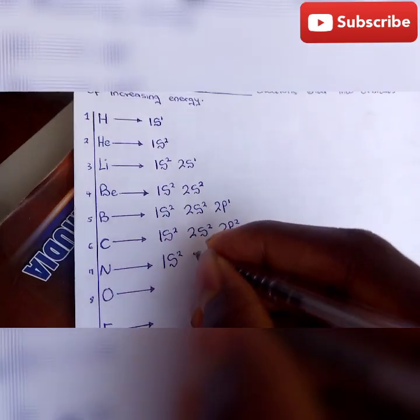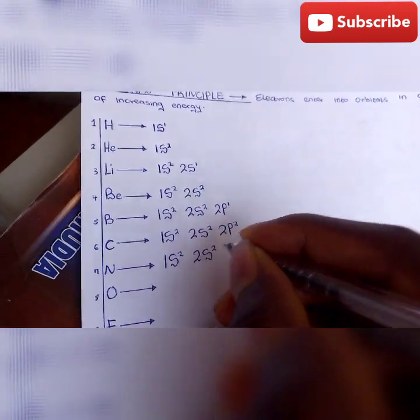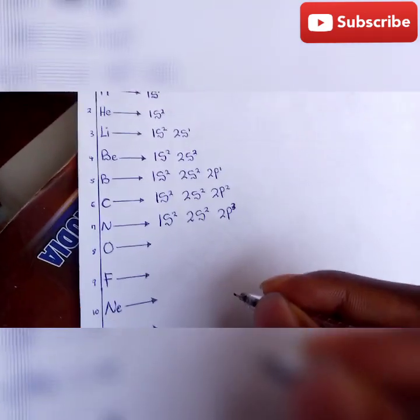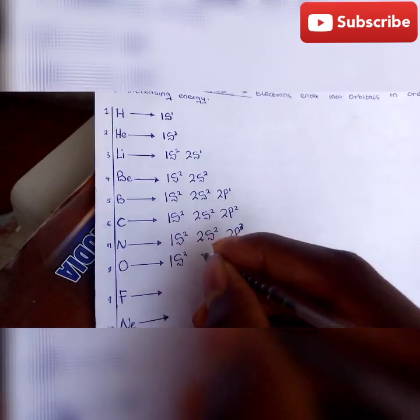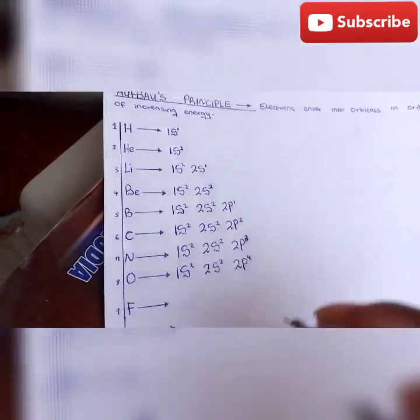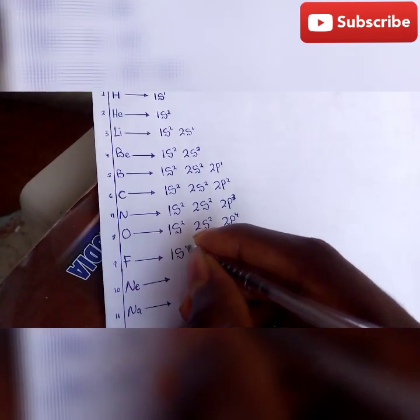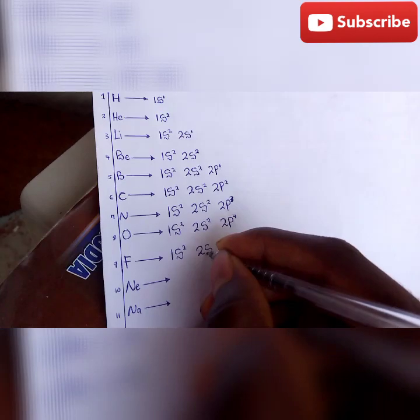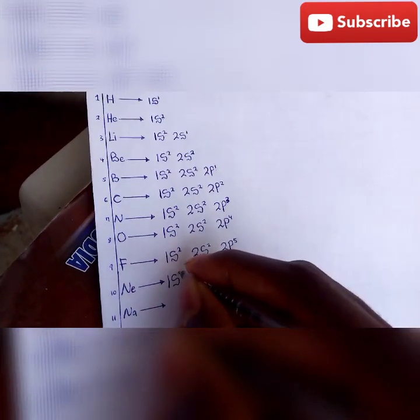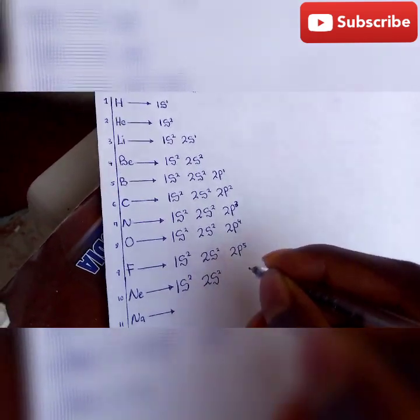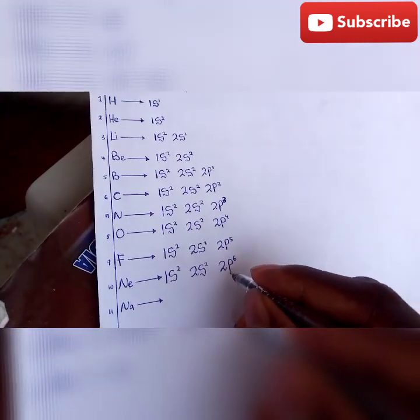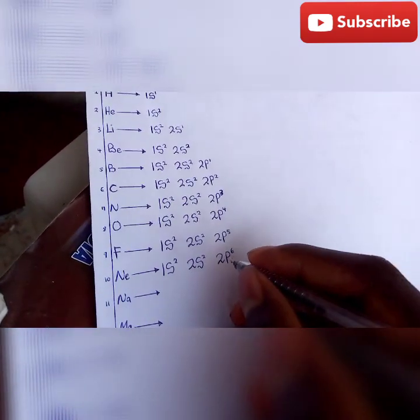Let's check on carbon: 1s² 2s² 2p². Nitrogen: 1s² 2s² 2p³. Oxygen: 1s² 2s² 2p⁴.